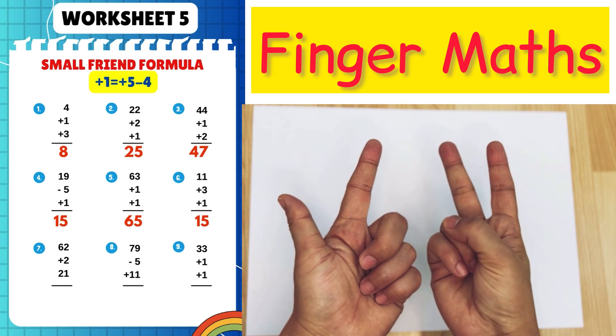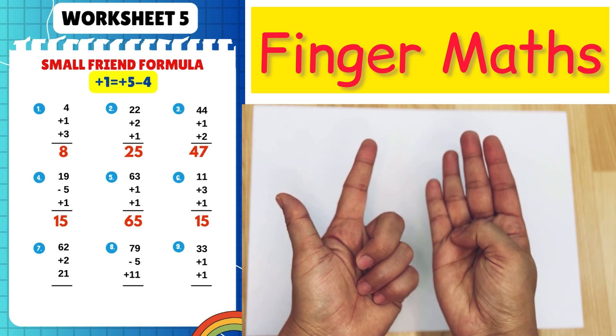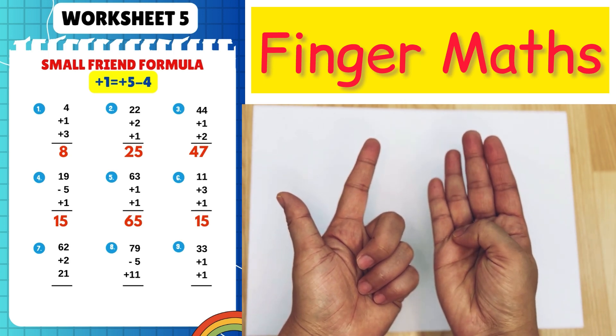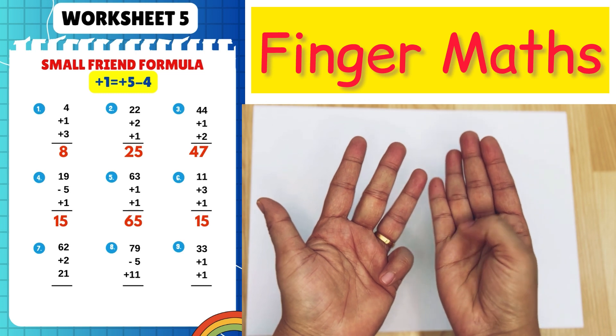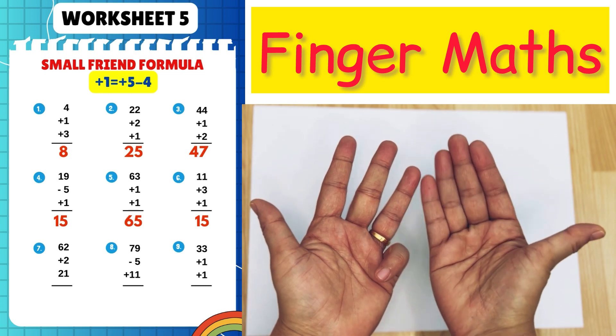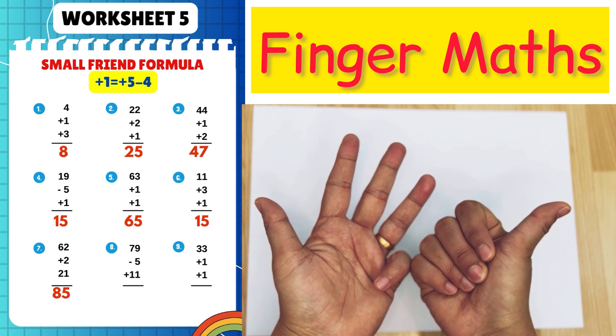62 plus 2 plus 21, plus 20 plus 1, plus 5 minus 4. Answer is 85.